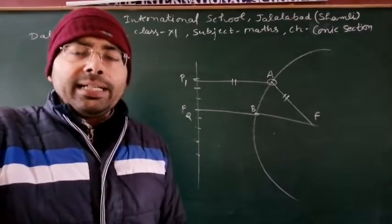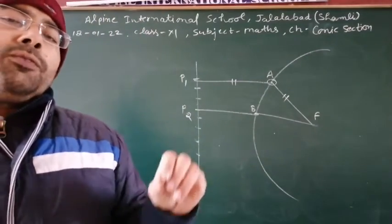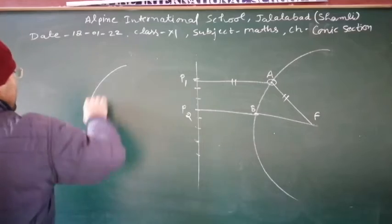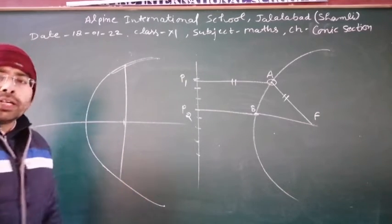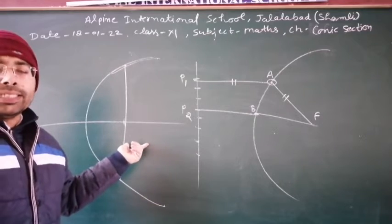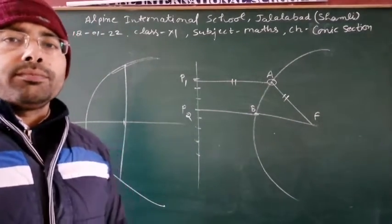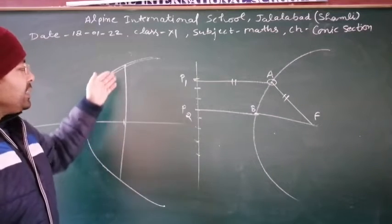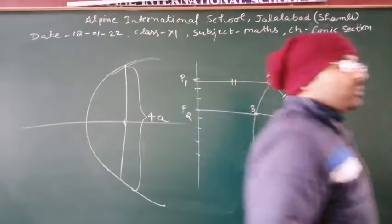The second concept is regarding the latus rectum. The latus rectum is the line which is perpendicular to the axis and passes through the focus. The axis of this parabola is the x-axis, and the latus rectum is also perpendicular to the axis. The length of the latus rectum is 4a — remember, the length is always 4a.